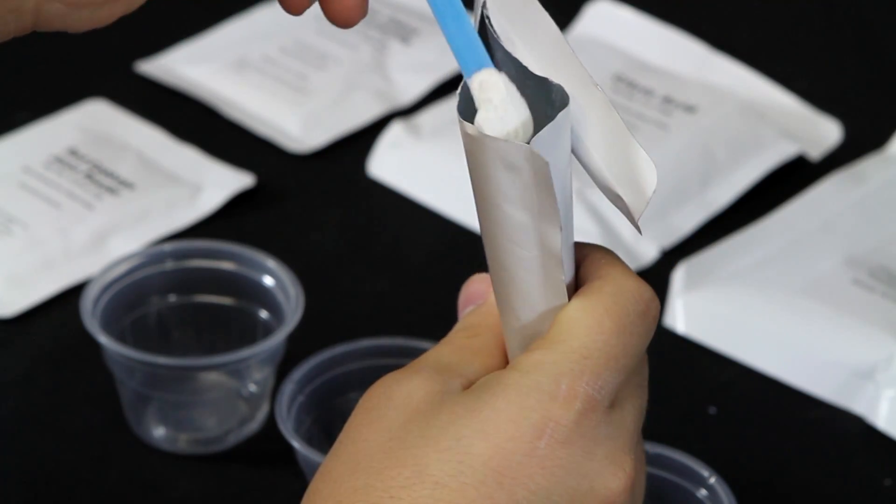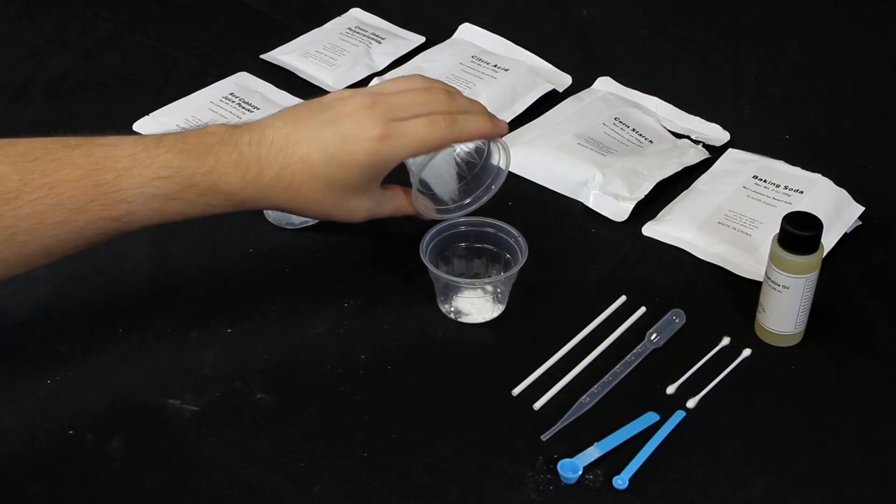In the Mind Blowing Science Kit, you'll find vegetable oil, citric acid, corn starch, baking soda, cross-link polyacrylamide, red cabbage powder, and 3 color tablets.